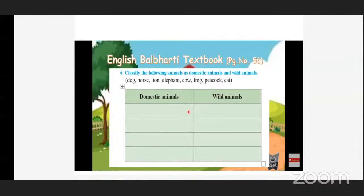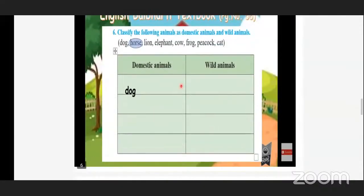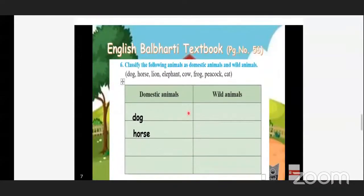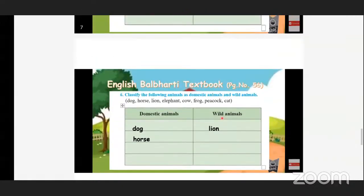First one is dog — dog is a domestic animal because we can keep the dog in our home. Second one is horse — horse is also a domestic animal. Third one is lion — you cannot keep the lion in our home, so it is a wild animal. Lions live in the jungle and satisfy their needs by eating other animals, so lion comes in wild animals.